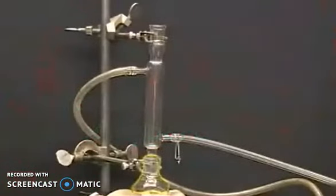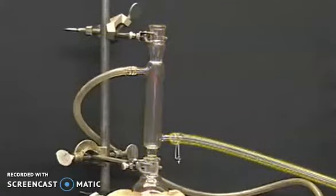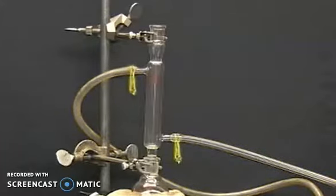Lightly grease the ring stand joints and attach it to the round bottom flask. Attach the water inlet tubing at the bottom connection and the water outlet tubing at the top connection. Secure the tubing with hose clamps.